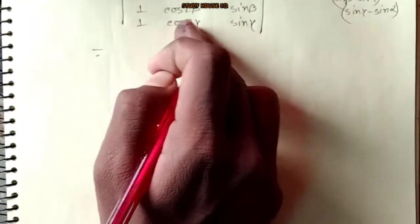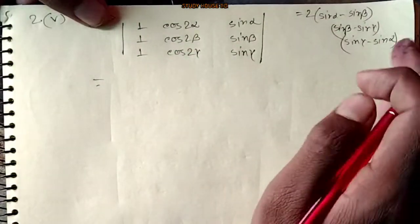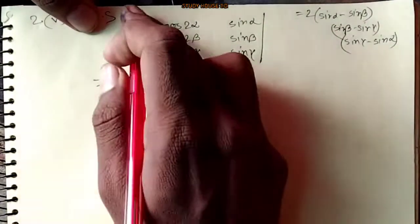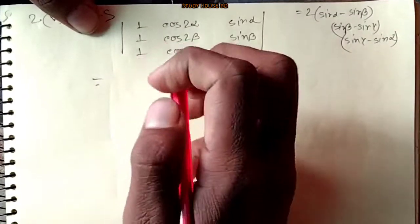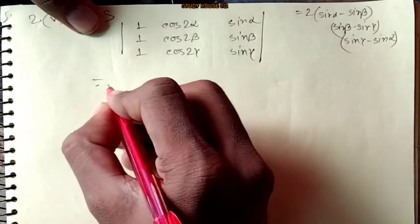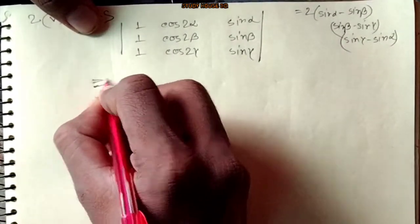Assalamualaikum, welcome to the video. Because of the value of 1.2L 5.0, the results are on the left side and the right side. This should be explained by the answer. Here we are showing 1, then we do a full list.